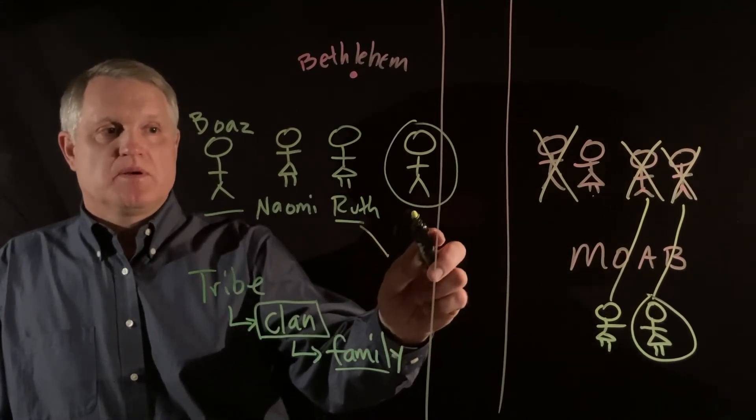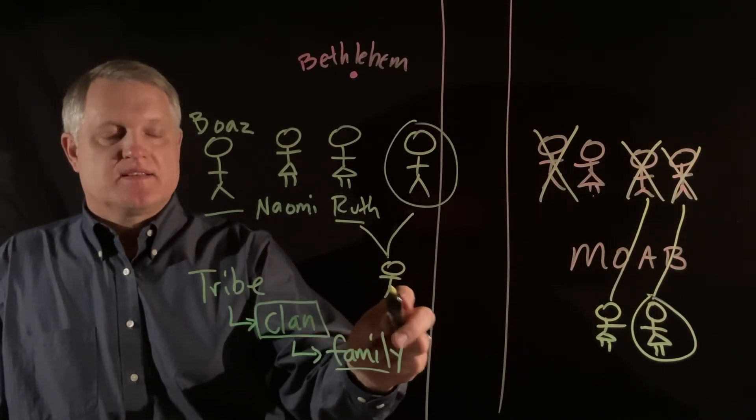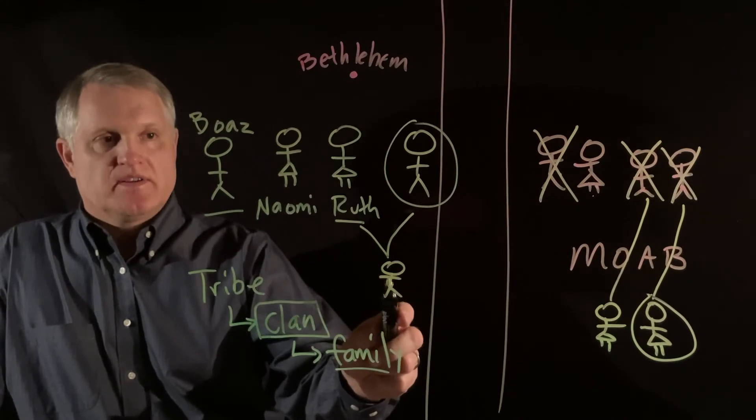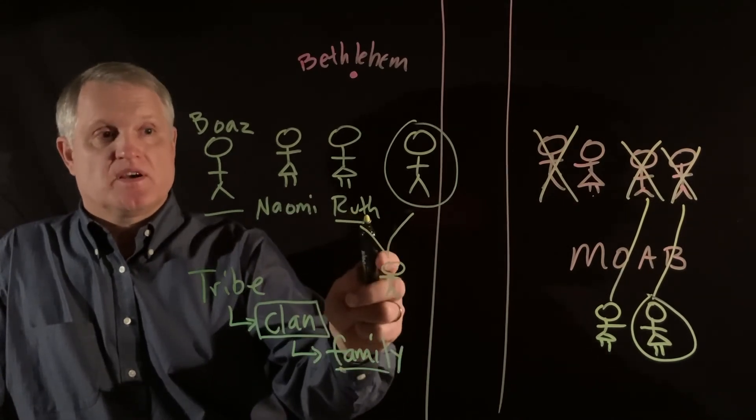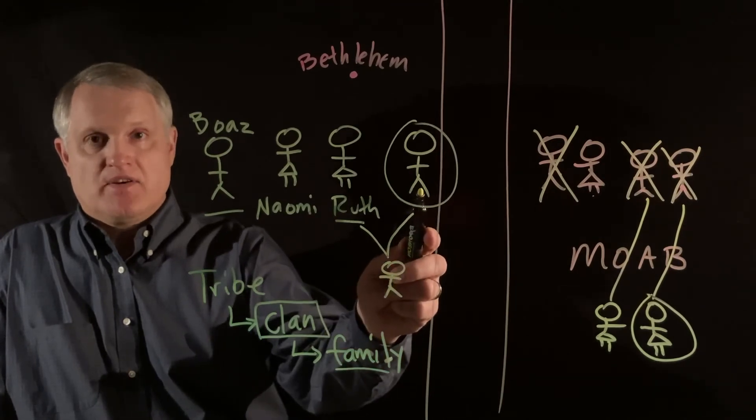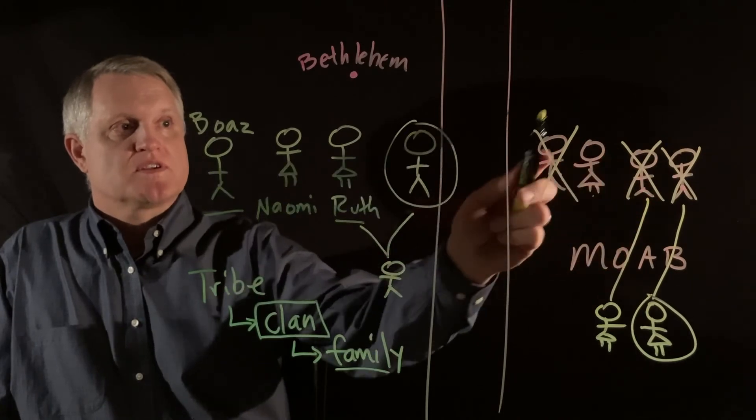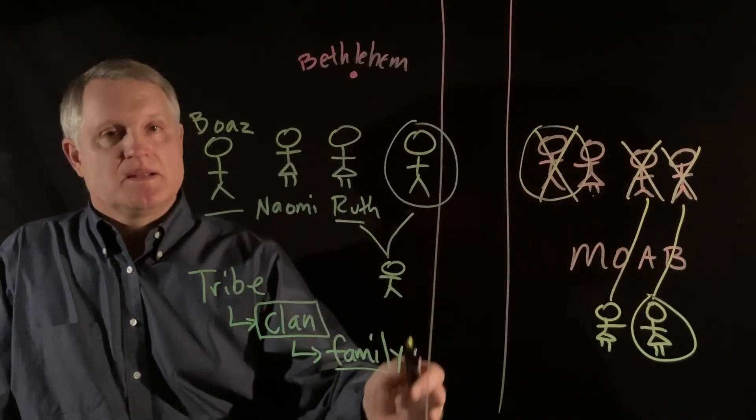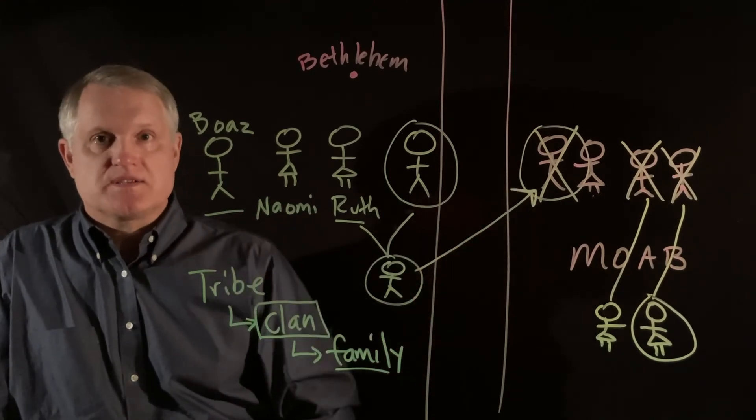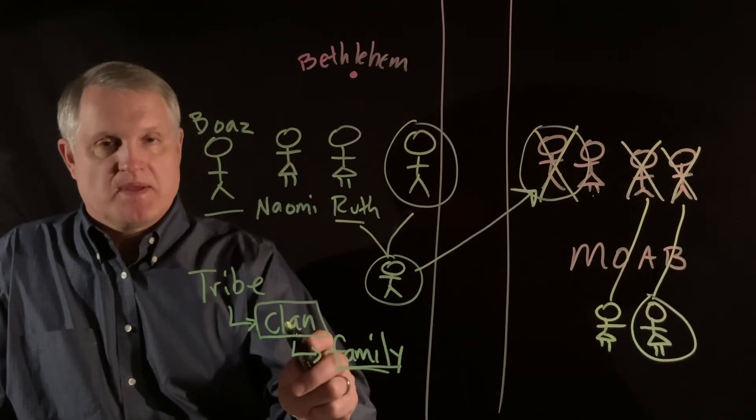The problem, and of course both men realize this as they're describing this, we shouldn't call it a problem, but just a reality, that the children that come with Ruth would not be this man's inheritance. Because remember, she was married to Malon, who is the son of Elimelech. This boy's inheritance rights would go through a deceased man, but it would go back to this family and not this man's family.